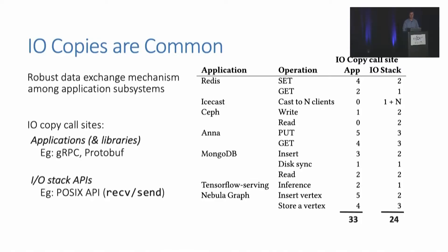I want to start by telling you that copies of I/O data are common in modern applications. Copies are a powerful tool used by applications to pass ownership of data between independent components and subsystems, and I/O is no exception. These copies can occur in a couple of different locations within applications and their libraries and also within I/O stack APIs.